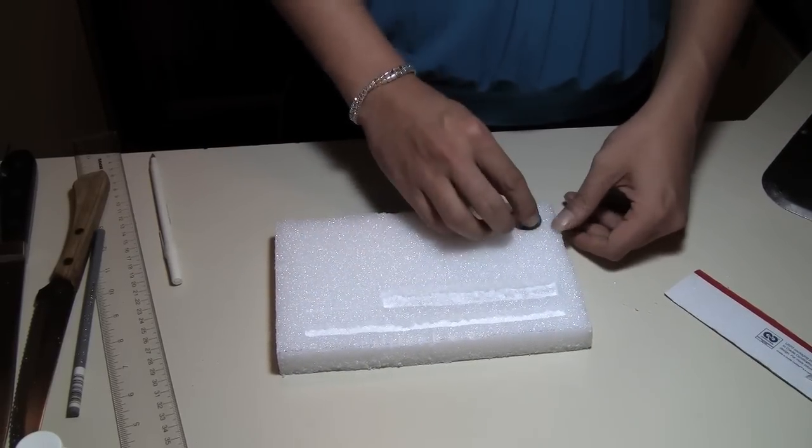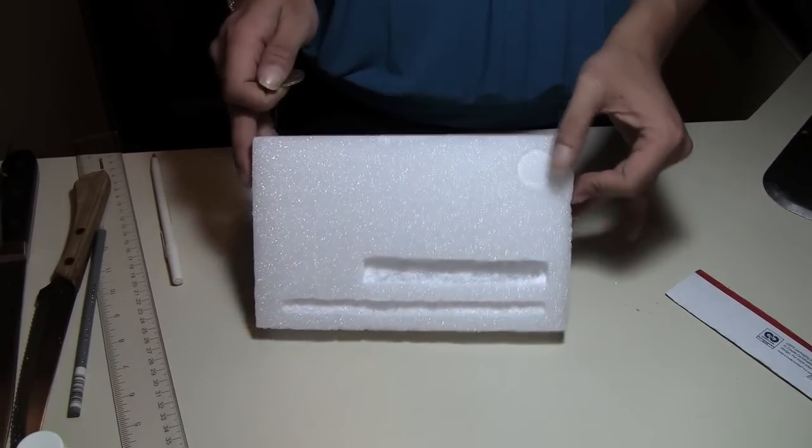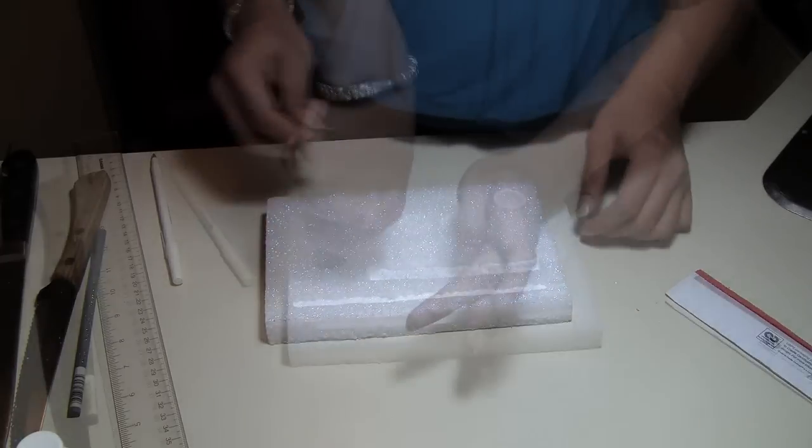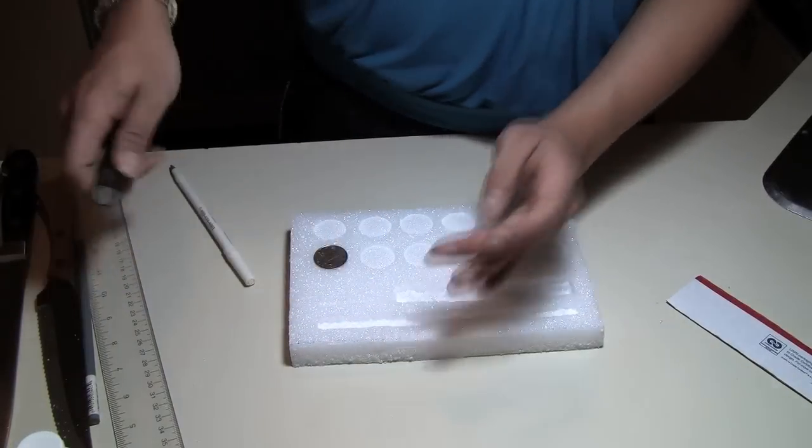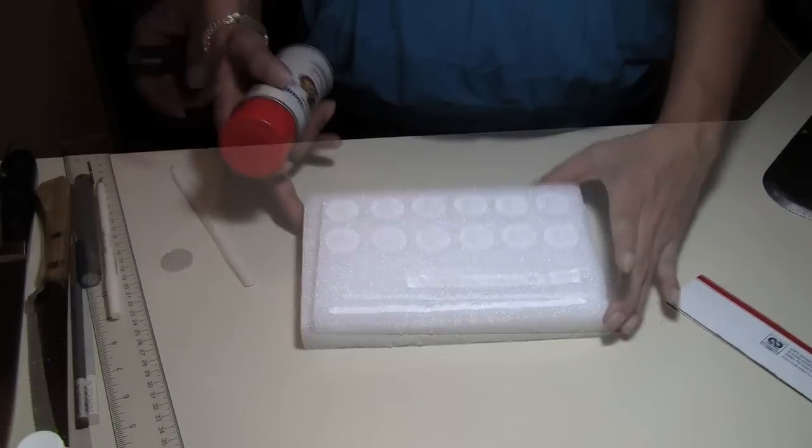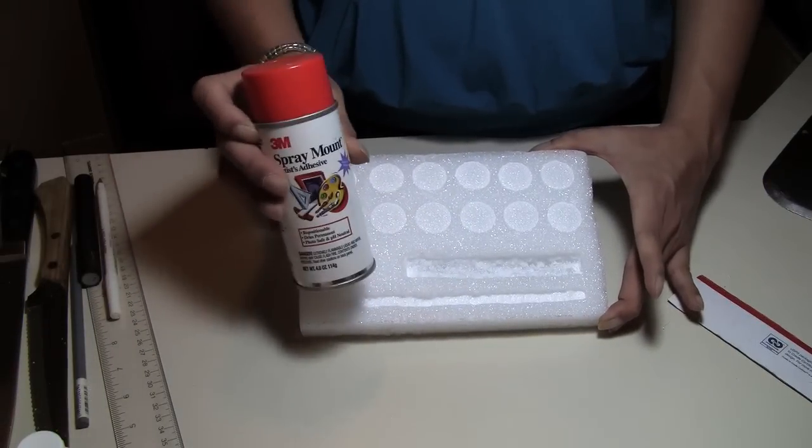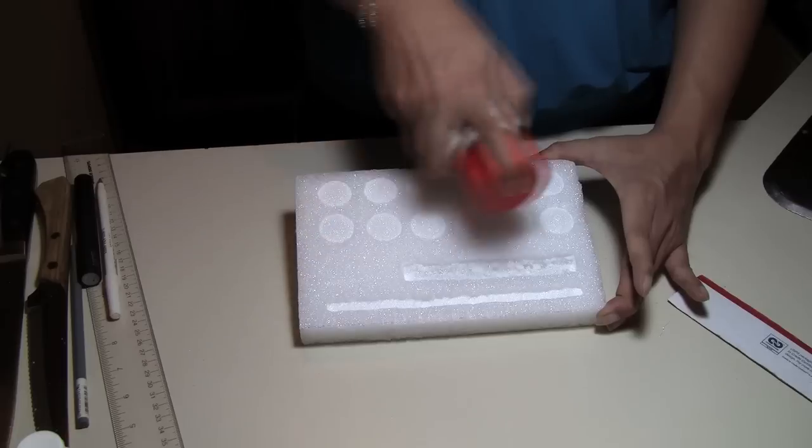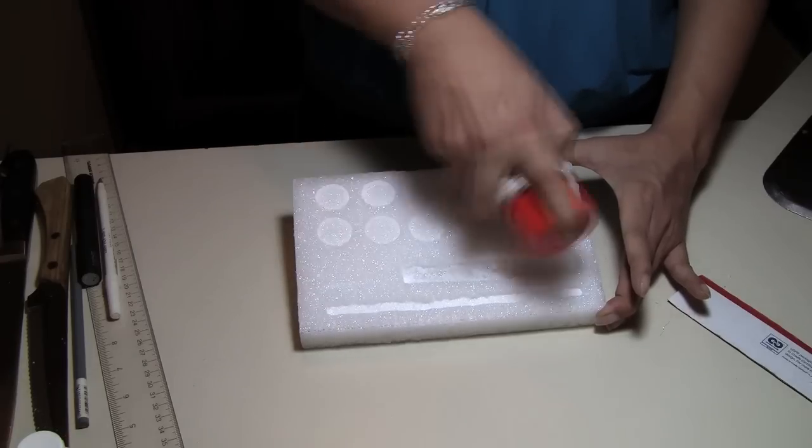And make sure that it's nice and flat and even. And when you remove the coin, you'll get a beautiful, beautiful well. So I'm just going to do this throughout the whole remaining part of the styrofoam. And then once again, using my spray mount adhesive, I'm just going to spray over that again to seal in the shapes.